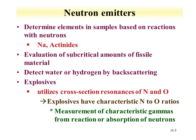The first set of isotopes to be discussed are those involved in neutron emitters—small sources designed to produce neutrons that drive reactions to determine something about a material. Elements in a sample can be identified based on reactions with neutrons. Small sources can be used for detection of sodium or actinides, and these neutron emitters are also used for evaluation of subcritical amounts of fissile material, probing neutron production in a subcritical configuration to determine if remediation is needed to prevent criticality.